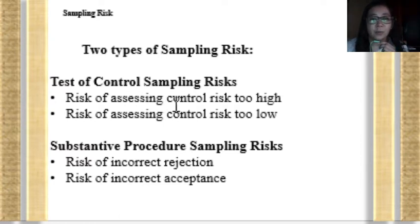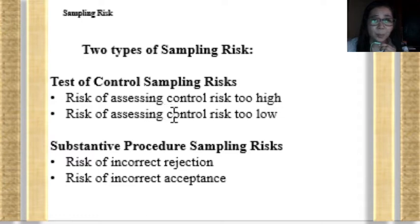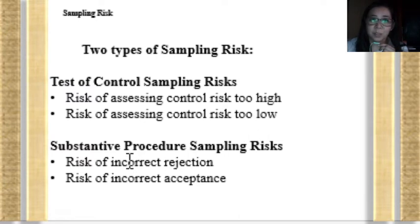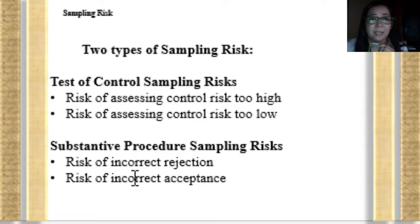For the test of control sampling risks, we have the risk of assessing control risk too high and risk of assessing control risk too low. For the substantive procedures sampling risk, we also have two types: risk of incorrect rejection and risk of incorrect acceptance.